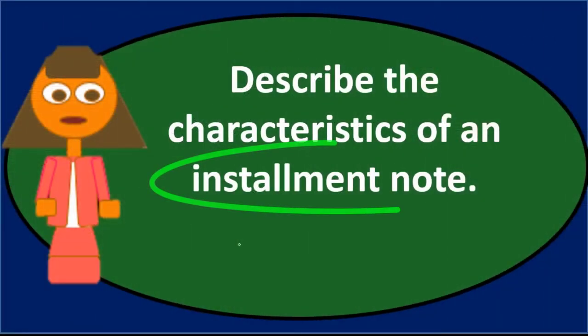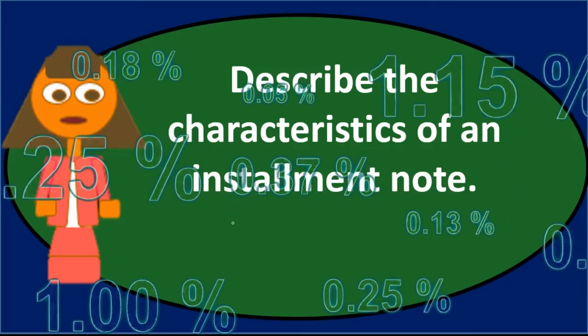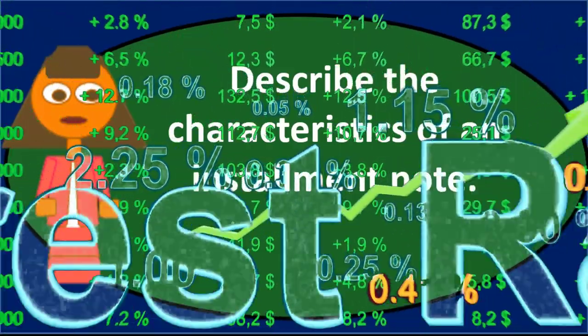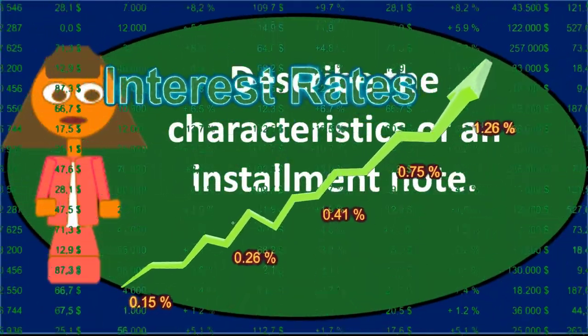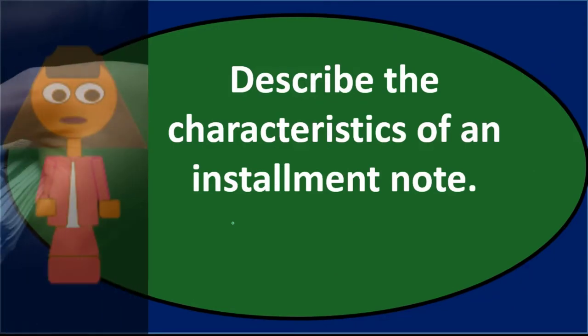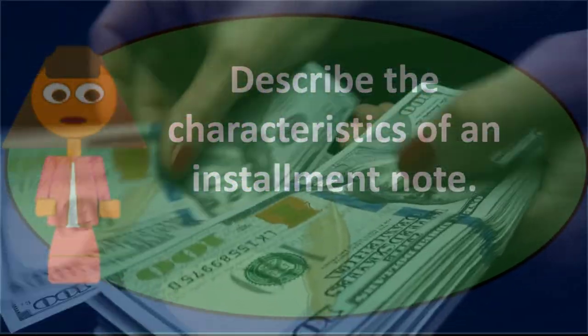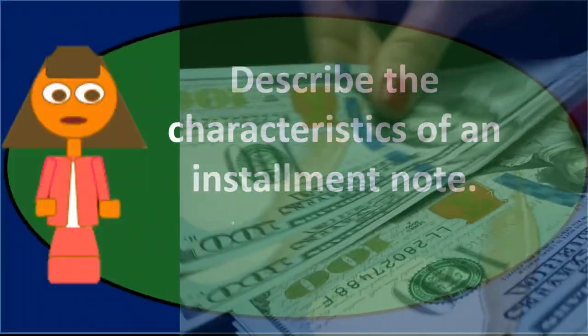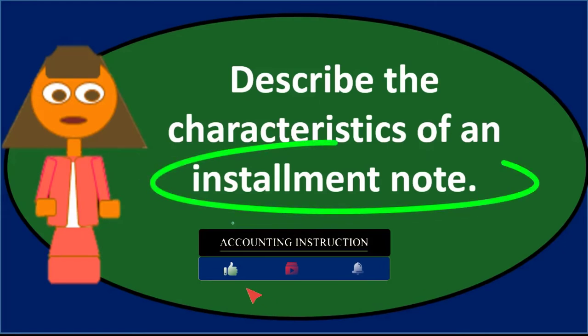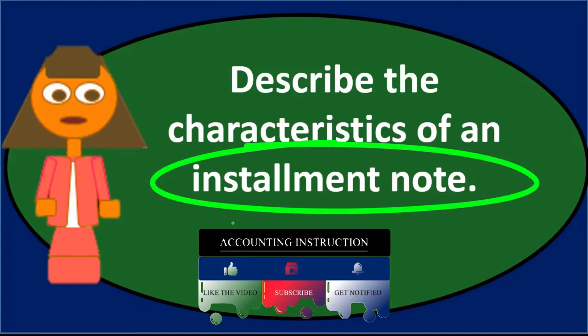So what that means is most of the notes we have are going to be an installment note, and that just basically means we're going to be paying back interest and principal in some type of installment payments. If we took out a $100,000 loan, we're going to be paying back some type of payments, typically those payments being even. That would be the installment note. Now we could get into more detail.